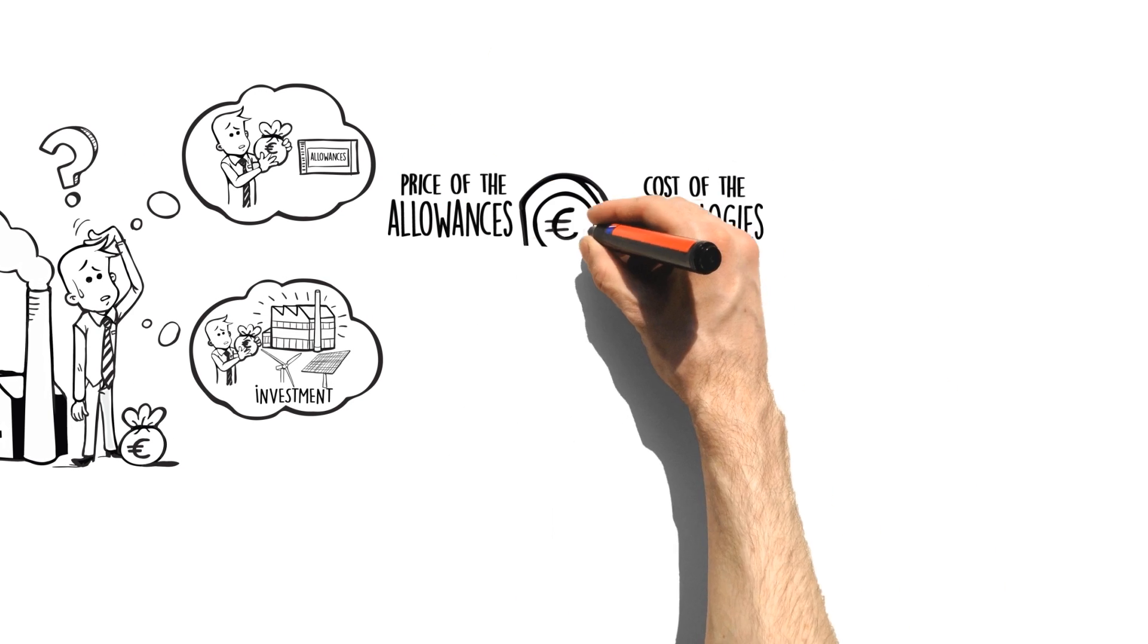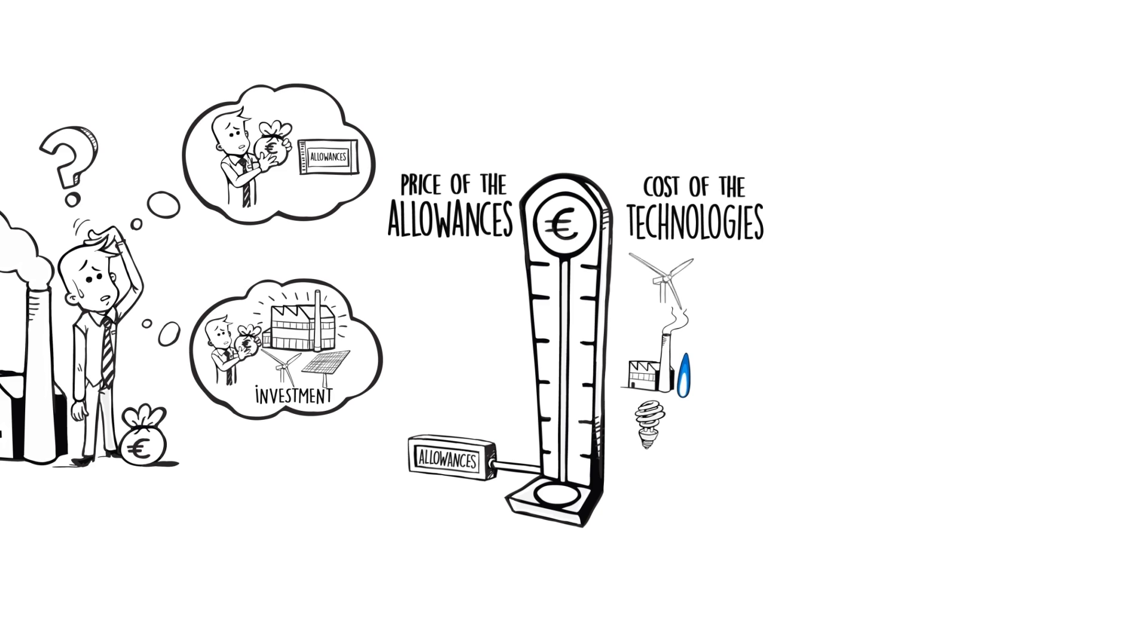If a company anticipates that the price of carbon will be lower than the cost of reducing its greenhouse gas emissions through technology, then it will most likely prefer to buy allowances or offset credits.